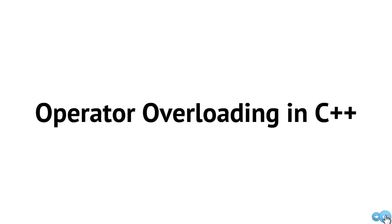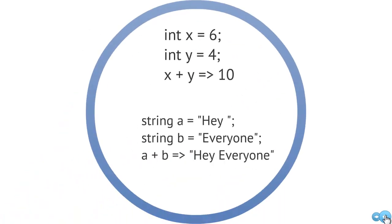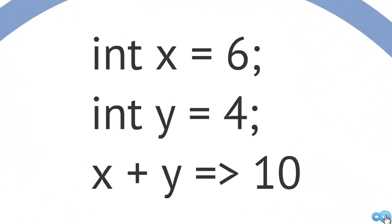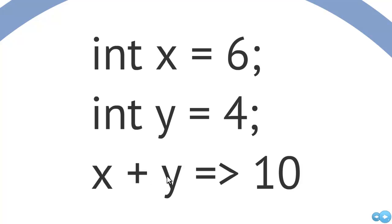In this video we're going to take a look at operator overloading in C++. Let's start with a couple of examples. The first example we have here, we see that we have the integer x and the integer y, where x has the value of 6 and y has the value of 4. If we were to see the expression x plus y, we know that we're doing a summation, so that would result in the value of 10.